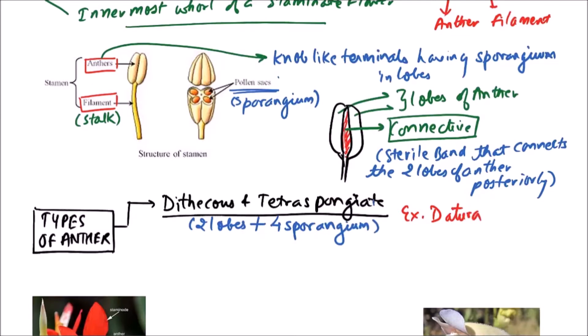Next one is monothecous and bisporangiate. In this type of anther, one lobe is present with two sporangia. The examples include Hibiscus.